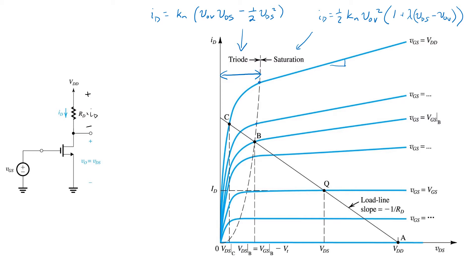Which means that VDS equals VDD minus RD ID. This relationship here captures the linear relationship between current and the voltage across resistor RD.